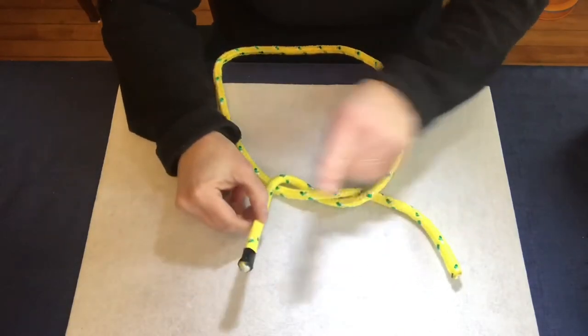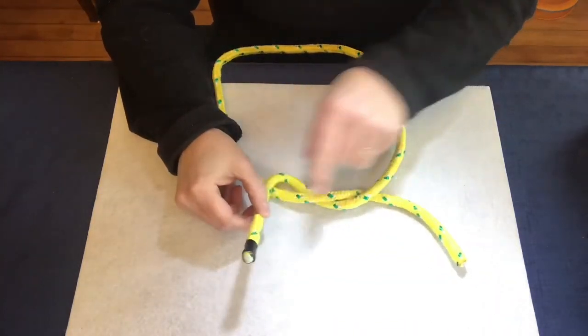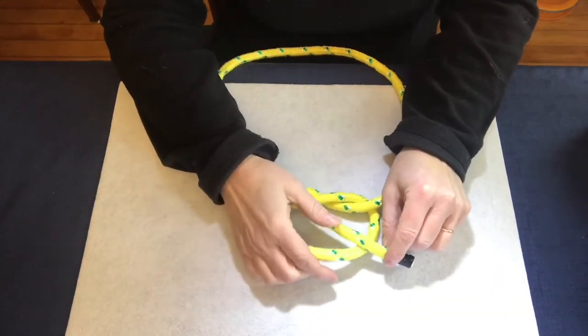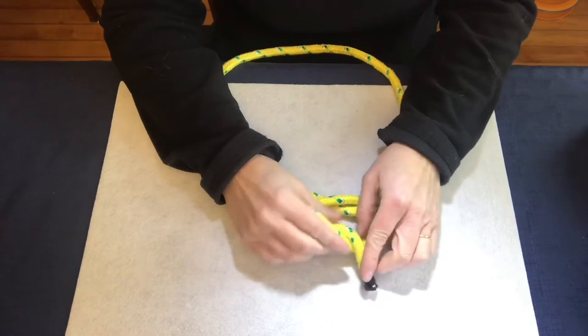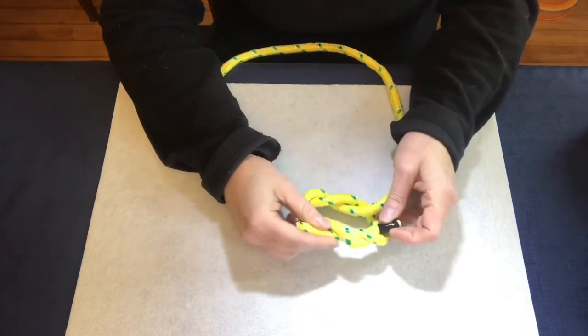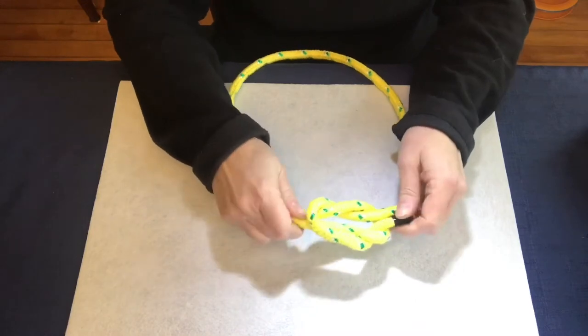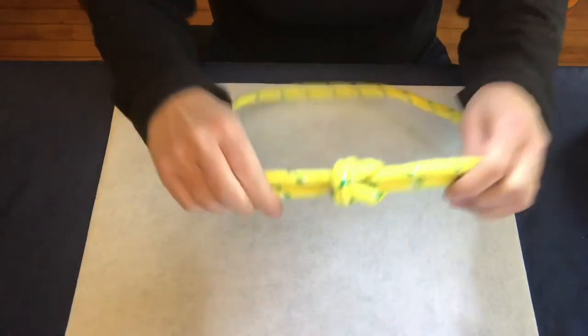And we're going to take that same side with the black tape and cross it again right here on top and go through the hole. This knot is good to pull at the same time with both hands. And here you are.